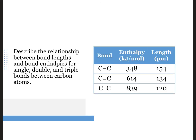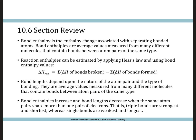Let's try an example. To describe the relationship between the bond lengths and the bond enthalpies for single, double, and triple bonds between carbon atoms, I gathered the appropriate data from tables 10.3 and 10.4. We see that increasing the bond order from single bond to double bond to triple bond increases the bond enthalpy and shortens the bond length.